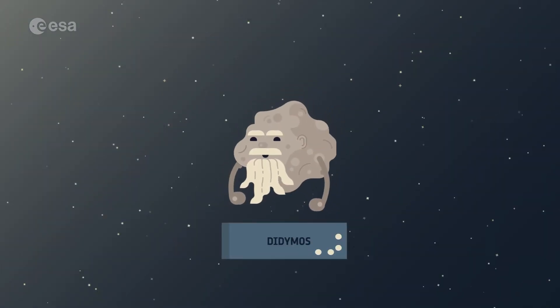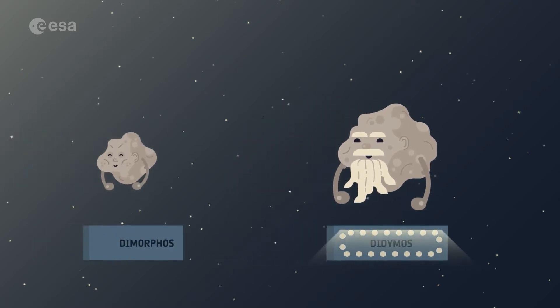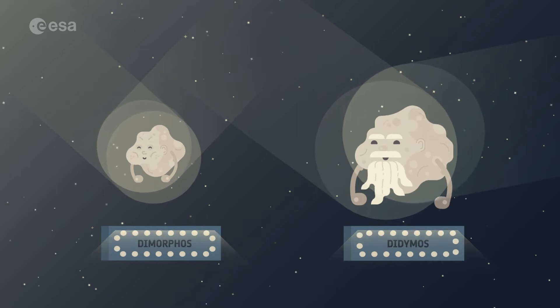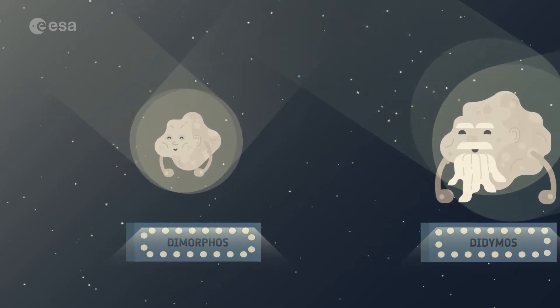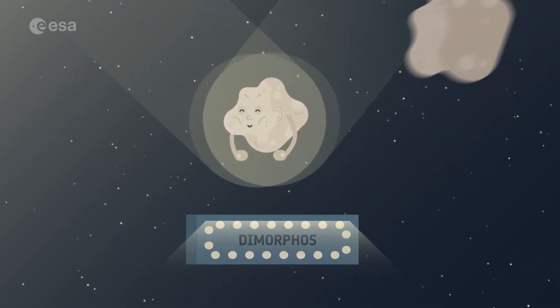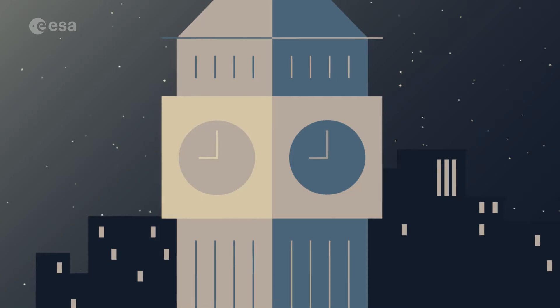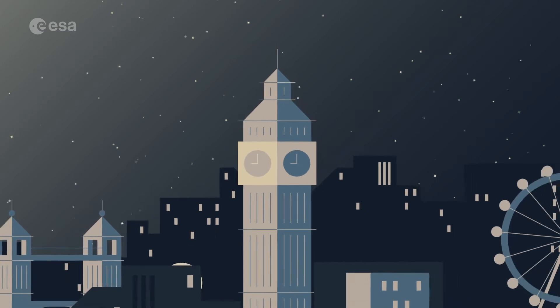Didymos is orbited by a smaller asteroid, Dimorphos. This pair poses us no risk, but our experiments with them will be key to keeping Earth safe. Dimorphos is a small asteroid, yet a rock of its size could devastate a small country or large metropolitan area.